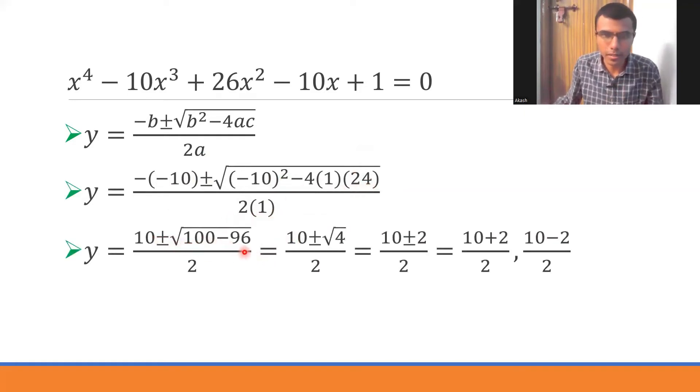10 ± √(100 - 96)/2. 100 - 96 is 4. So here you are, and √4 is 2. So ultimately I will be getting (10 ± 2)/2.